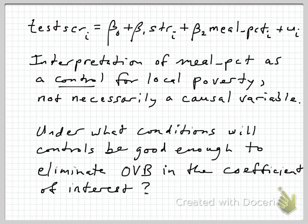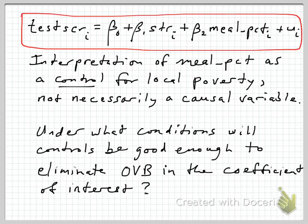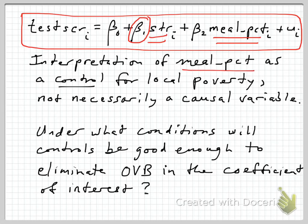Here's a very simplified version of a multiple regression for this case, where the dependent variable is the test score in district i, and that's a linear function of the student-teacher ratio in that district — that is our variable of interest. We're interested in getting a good estimate of beta 1, which is essentially the class size effect on student learning. And then we have a second regressor, which is the percentage of kids on subsidized meal plans.